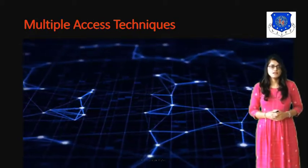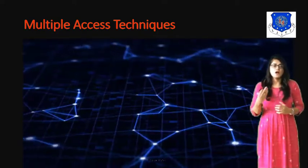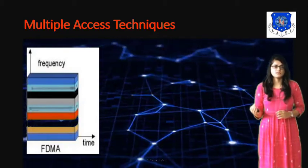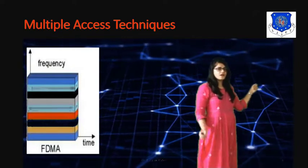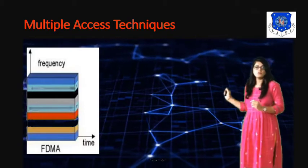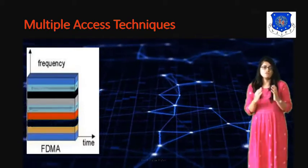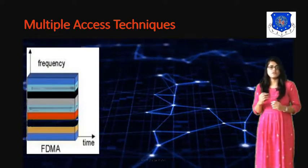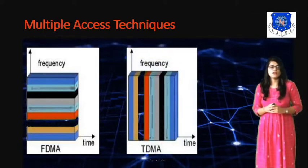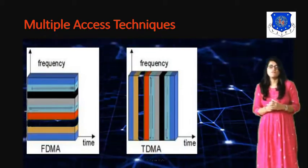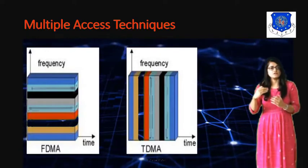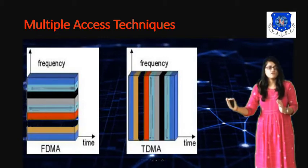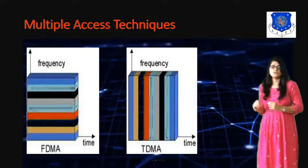Multiple access means many users use the same set of channels at a time. The basic technique is FDMA — Frequency Division Multiple Access. In this, the frequency is divided into a number of frequency bands or channels; at a time, one user uses one set of frequency. Next is TDMA — Time Division Multiple Access. In this, the overall time is divided into a number of time slots instead of frequency bands, so synchronization at the receiver end is necessary because users use a particular frame structure.